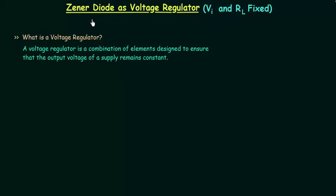In this lecture I will explain the Zener regulator circuit. This is a very important lecture, and if you are expecting numerical problems from Zener diode then you must understand all the points explained here. I will start with the voltage regulator. A voltage regulator is a combination of elements designed to ensure that the output voltage of a supply remains constant.